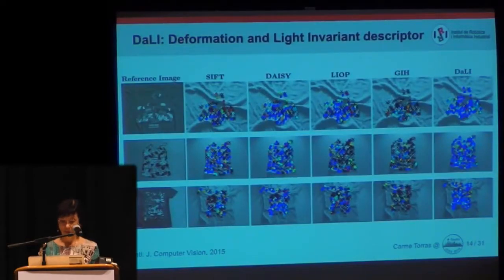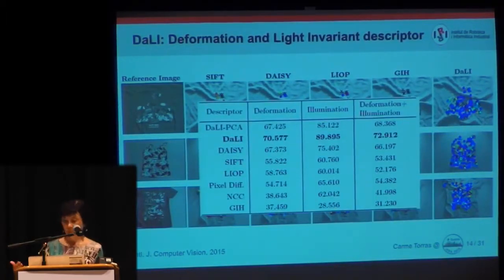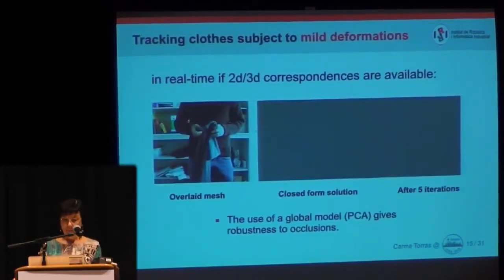We have developed a descriptor called DALI, for the Deformation And Line Invariant descriptor, which has shown to outperform state-of-the-art descriptors such as SIFT and DAISY, as shown in this image. We have also collected a database of pieces of clothing and compared all these descriptors. DALI outperformed all of them, with DAISY coming very close. This work is now being published in the International Journal of Computer Vision.